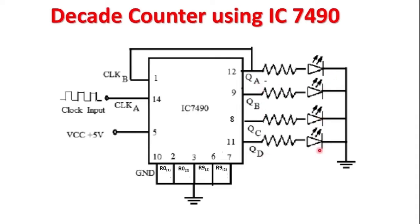I have connected 4 LEDs so I can observe the output in the form of 1s and 0s. The IC is supplied with plus 5 volts on pin number 5, and pin number 10 is connected to ground. Apart from pin number 10, R01 and R02 are connected to ground since I don't want to use them. Similarly, R91 and R92 are also connected to ground since I don't want to reset the counter to 9.